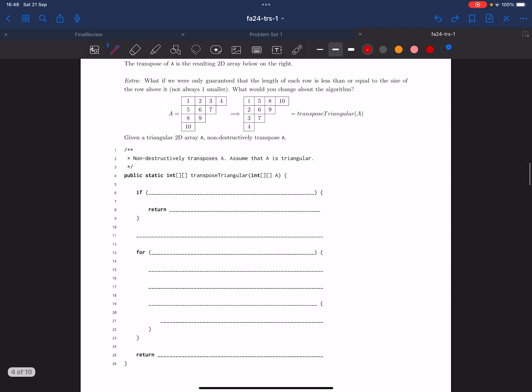Line number six is an if condition. Whenever you see an if condition in the first lines of the method, that means it's probably a base condition. In our case, it will be A.length equals zero.